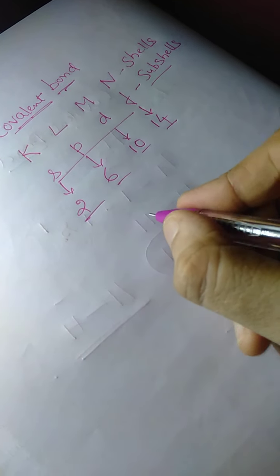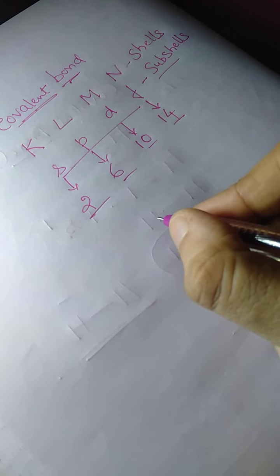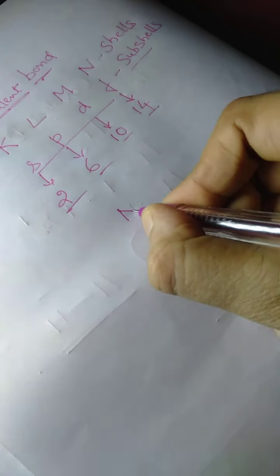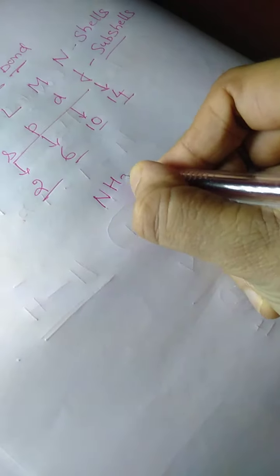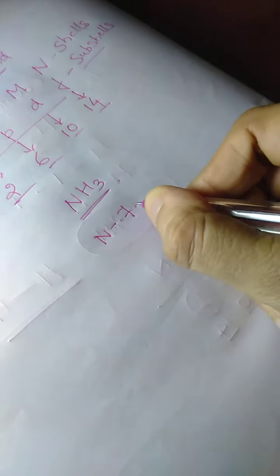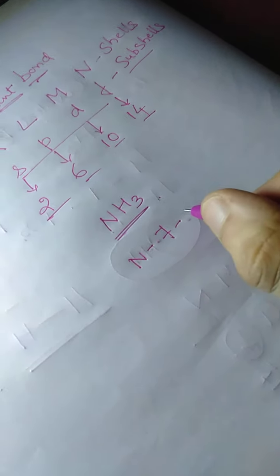Now let us discuss about the formation of covalent bond in ammonia. In the previous video I discussed about the formation of covalent bond between two hydrogen atoms. Nitrogen has atomic number 7. Now let us write the electronic configuration of nitrogen.